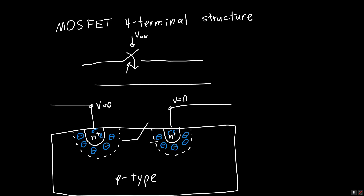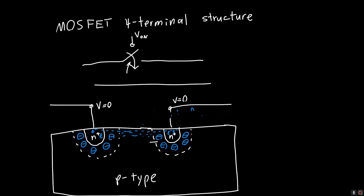But what if we were able to somehow make it so there's a bunch of electrons all throughout this p-type region? What if we could form a channel of electrons? And what if we could form this channel by applying a voltage somewhere? Indeed, that's exactly what a MOSFET lets us do — that's what we've been learning over the last few videos. That's what we need a gate for.